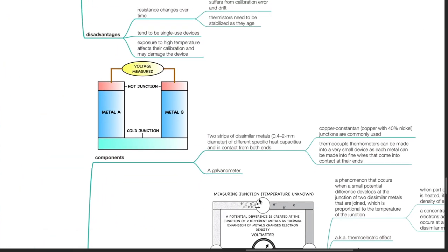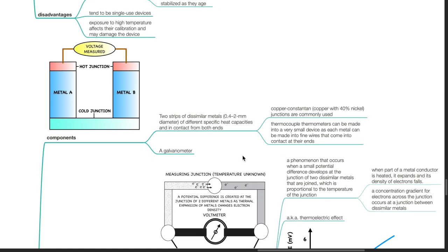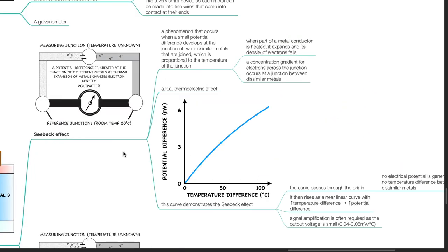Thermocouple: a thermocouple consists of two strips of dissimilar metals, 0.4 to 2 mm diameter, of different specific heat capacities, in contact from both ends. Copper and constantan junctions are commonly used. Thermocouple thermometers can be made into very small devices as each metal can be made into fine wires that come into contact at their ends. Another component is a galvanometer. The Seebeck effect is a phenomenon that occurs when a small potential difference develops at the junction of two dissimilar metals, proportional to the temperature of the junction. When part of a metal conductor is heated, it expands and its density of electrons falls, creating a concentration gradient for electrons across the junction. This is also known as the thermoelectric effect.